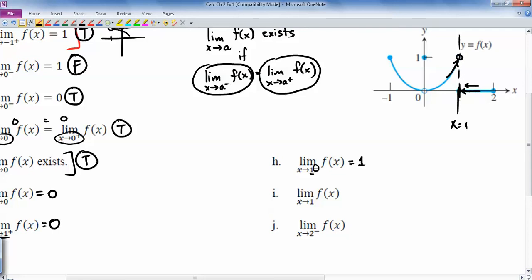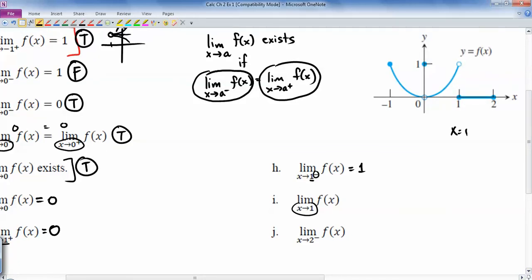This one right here, limit as x goes to 1, it doesn't have a plus or minus associated with it. So you would want to check both sides. So in one case, it approaches the y value of 1, and in the other case, it approaches the y value of 0. Here's 1, here's 0. So they're two different things. So that actually means that this does not exist. And that's because the limit as x goes to 1 from the left is not the same thing as x going to 1 from the right.